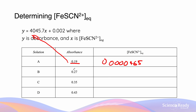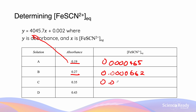If we do the same calculation for the remaining solutions — substituting each absorbance value into y and rearranging for x — we end up getting: for solution B, 0.0000662 mol/L; for C, 0.0000860 mol/L; and for D, 0.0001057 mol/L.